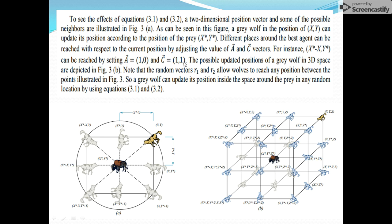For example, if a wolf is at position (x, y) and the prey is at (x*, y*), and vector A is (1, 0) and vector C is (1, 1), the wolf could move to position (x* - y, y*). These positional values can vary in three-dimensional space as well. This position updating is required for all agents, not just a single one, so that every wolf moves nearer to the prey and is able to attack.